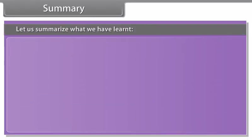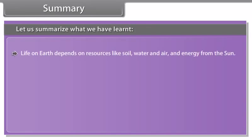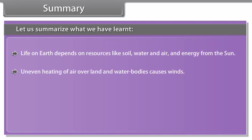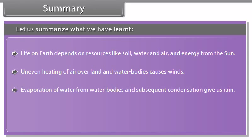Summary. Let us summarize what we have learned. Life on Earth depends on resources like soil, water and air and the energy from the sun. Uneven heating of air over land and water bodies causes winds. Evaporation of water from water bodies and subsequent condensation give us rain. Rainfall patterns depend on the prevailing wind patterns in an area.